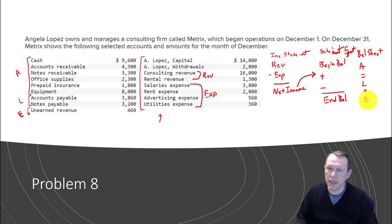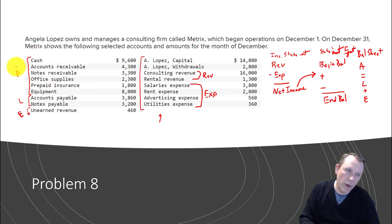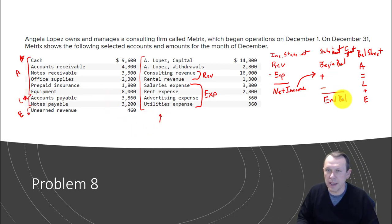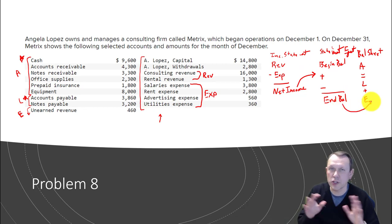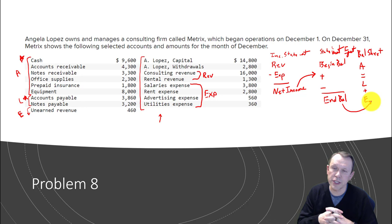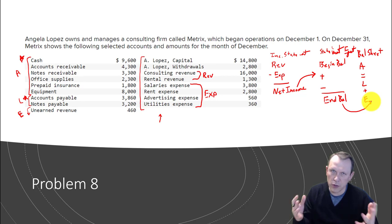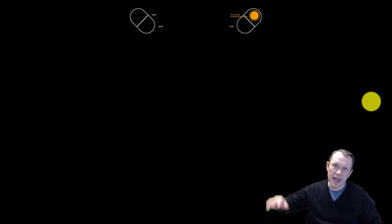The last financial statement is the balance sheet: assets equals liabilities plus equity — that's our accounting equation. All the assets get pulled over into the balance sheet, all the liabilities get pulled over, and for equity we grab the ending balance from the Statement of Owner's Equity and plug it in. That's for a sole proprietorship, which is what we're doing right now. By the end of the term we'll talk about corporations and partnerships. Hopefully this helps — have a good day, and reach out if you need any help.